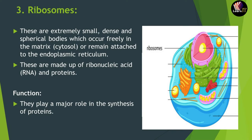The third organelle is ribosomes. As discussed earlier, when ribosomes are present on the endoplasmic reticulum it is RER, and when absent it is SER. Ribosomes are very small, dense, spherical bodies which occur freely in the matrix of the cytosol and are sometimes attached to the endoplasmic reticulum. They are made up of ribonucleic acid (RNA) and proteins. Their main function is protein synthesis.